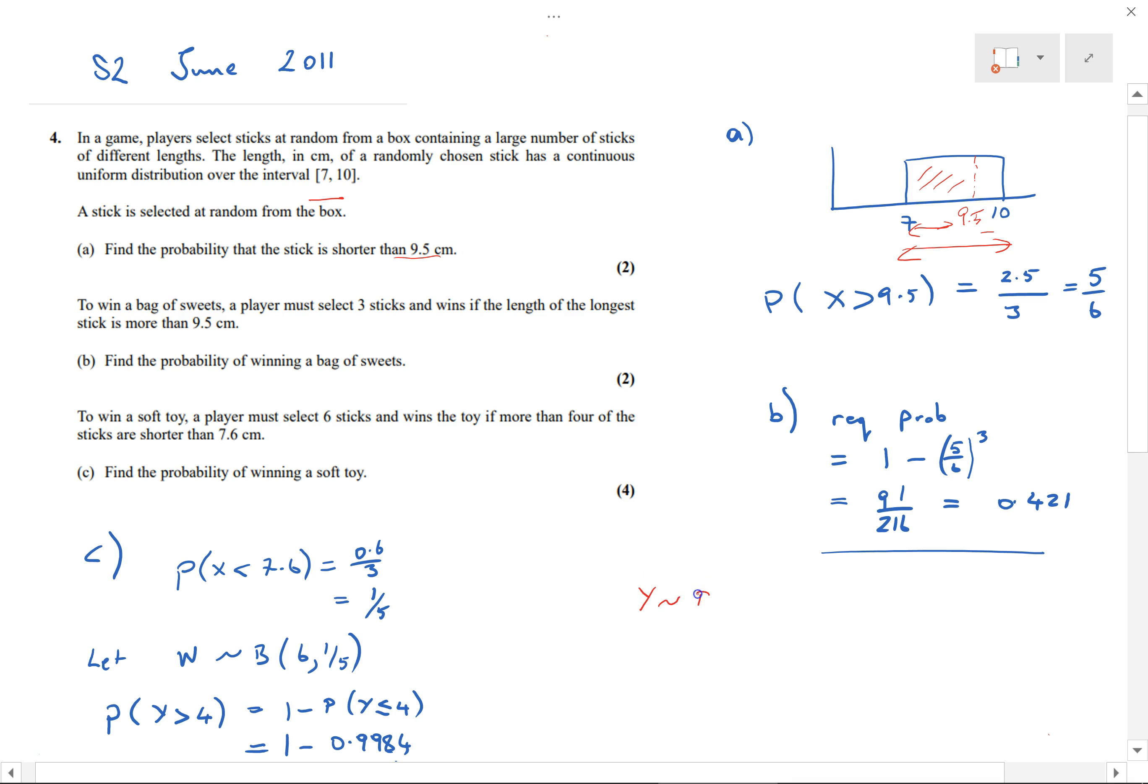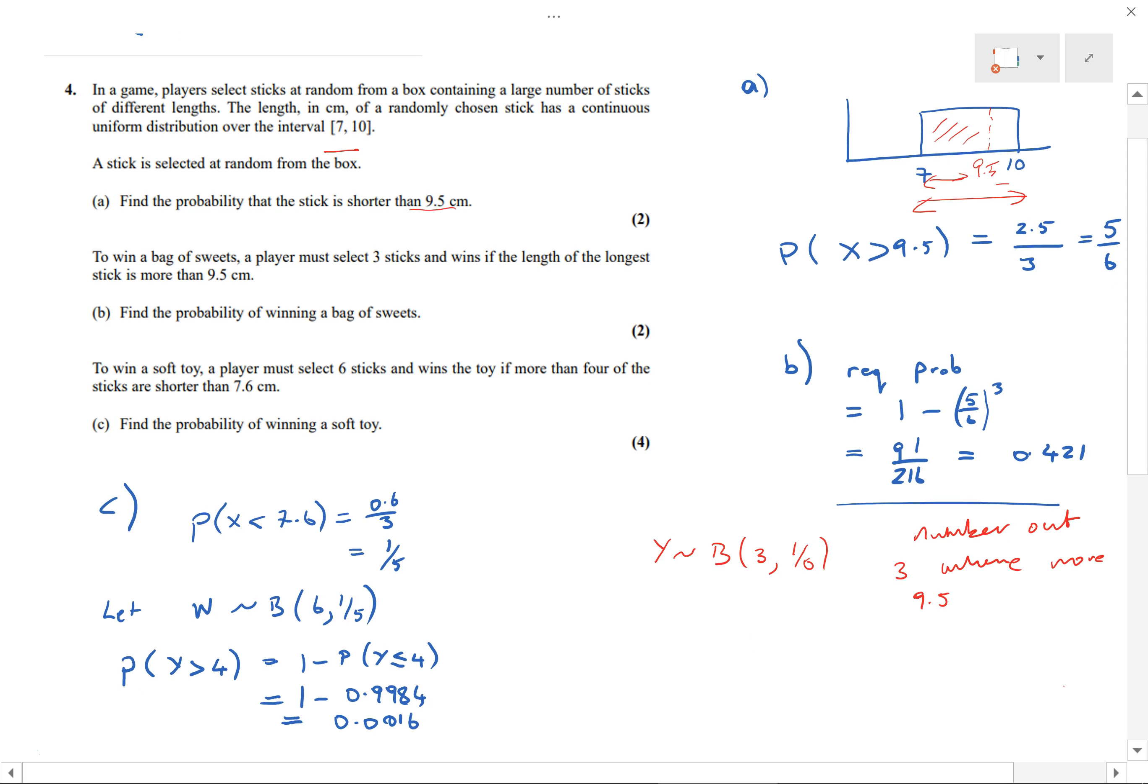So I'm going to define the binomial Y to be B(3, 1/6), which is basically the number out of three (because three sweets are chosen) where they're more than 9.5. So the number out of three which are more than 9.5. Why have I done that? Well, because for the required probability, what if all three of them were greater than 9.5?